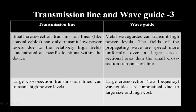For large cross-section transmission lines it is impractical to achieve a large cross-sectional area in conventional lines like parallel wires or coaxial cables, which limits their power handling capability. In waveguides, a large cross-section is achievable. However, at low frequencies, waveguides become impractical due to their large physical size and high cost.